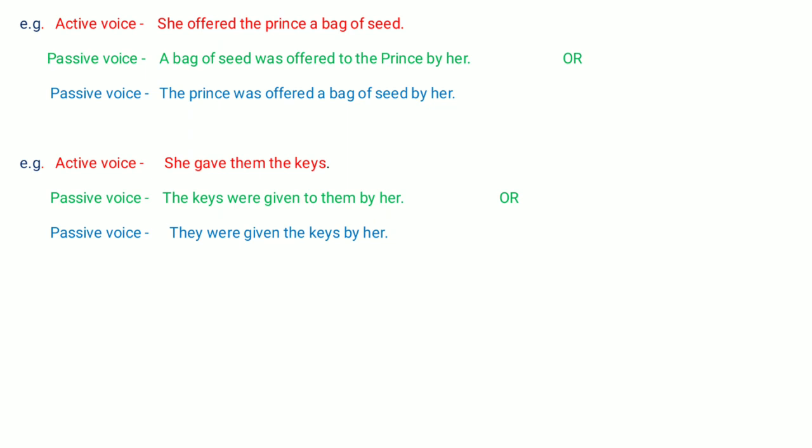Last example for two objects: 'She gave them the keys.' What did she give? 'The keys' — direct object. To whom? 'To them' — indirect object. Taking direct object as subject: 'The keys were given to them by her.' Taking indirect object as subject: 'They were given the keys by her.'